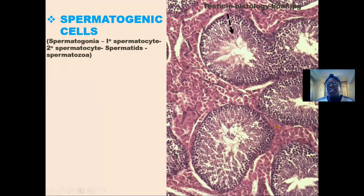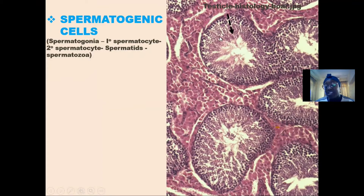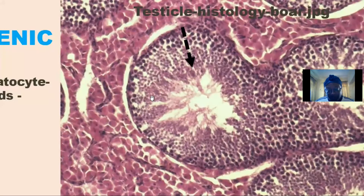Then the spermatogonia will further develop into primary spermatocyte. From there, we have the secondary spermatocyte, which finally becomes the spermatid. These spermatids are seen like a thread-like presentation just close to the lumen of the seminiferous tubules. If we zoom through it, we'll see how the spermatids look like — this thread-like configuration just close to the central lumen of the seminiferous tubules.